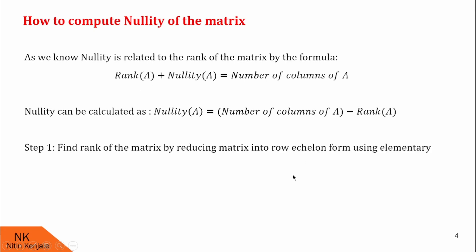For that in step one, first we find the rank of the matrix by reducing the matrix into row echelon form using elementary row transformations. And in step two, we find the nullity using the formula nullity of A is equal to number of columns of A minus rank of A.